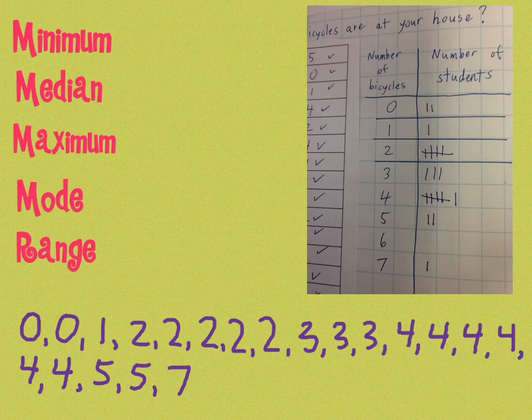And now we can start to figure these out. So the minimum, the smallest number, zero bicycles, and the maximum was seven bicycles. Now, we're going kind of out of order here, but we know the range is the maximum minus the minimum, which in this case is quite easy. Seven minus zero is going to give me seven for the range.